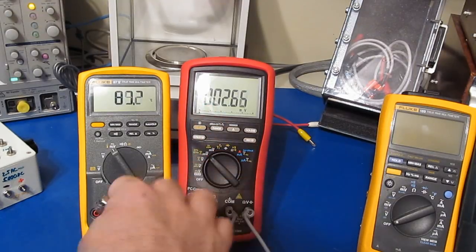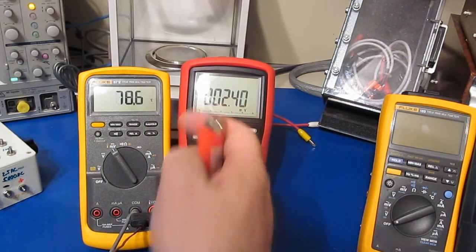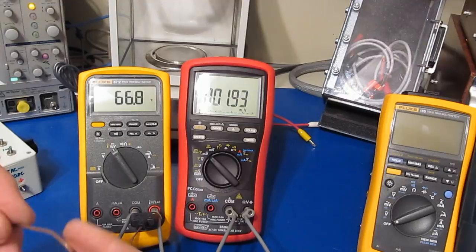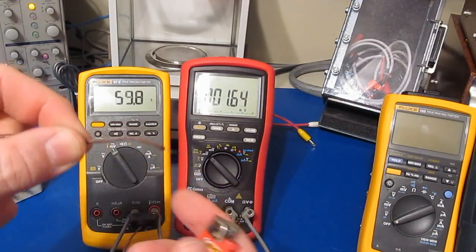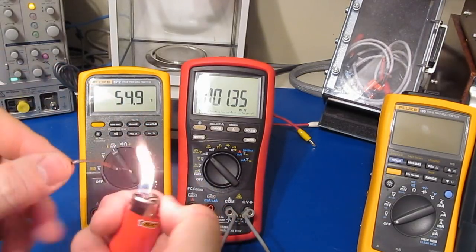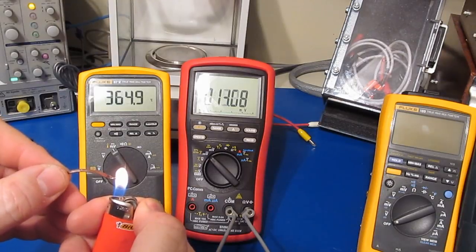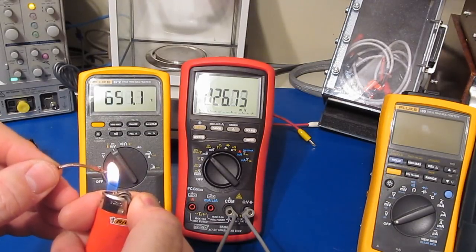So with the real probe, the meter has no trouble reading above 500 degrees Celsius. If we look at the Breiman, this is actually in parallel with the Fluke, so we're measuring the output voltage of the thermocouple. The way a thermocouple works is this is actually a voltage source.